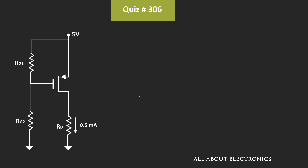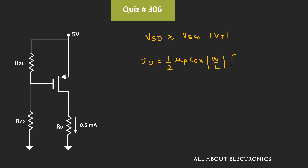First of all, if you observe, this is the p-channel MOSFET. For the p-channel MOSFET to operate in the saturation region, the condition is the voltage VSG should be greater than or equal to VSG minus VT. And in the saturation region, the drain current Id can be given as one-half times µP times COx times W/L times (VSG - VT) squared.